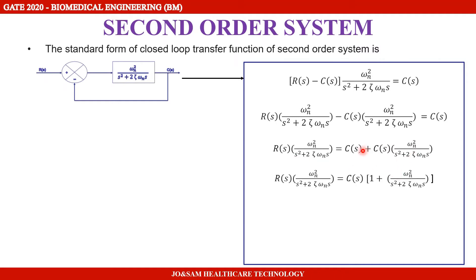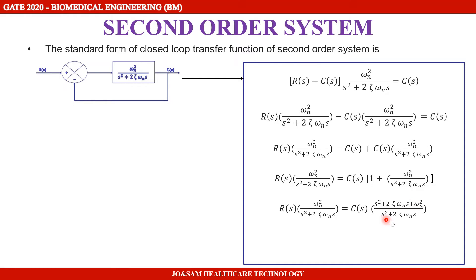C(S) will be factored as common: C(S) times (1 plus gain term). The denominator becomes a common denominator with 1 plus ωn² divided by that denominator. The transfer function C(S)/R(S) is derived from this equation.